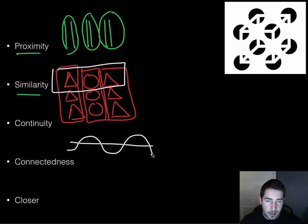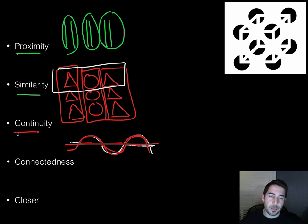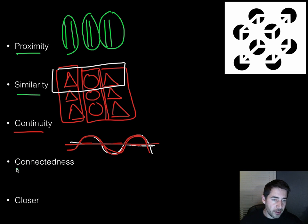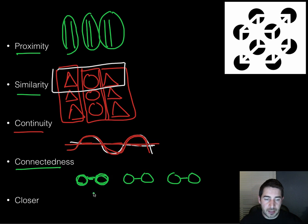Continuity: if I have something that looks like this, in reality it could be a whole bunch of semicircles with line segments running in between them, but we tend to see it as one continuous line going all the way through and one continuous straight line — even though we don't really know if that's the case. We make this continuity among things that might not necessarily be continuous. Connectedness: if I draw something like this — two circles connected by a line — we tend to see them as one unit rather than separate shapes.